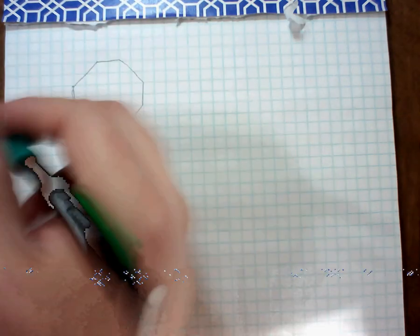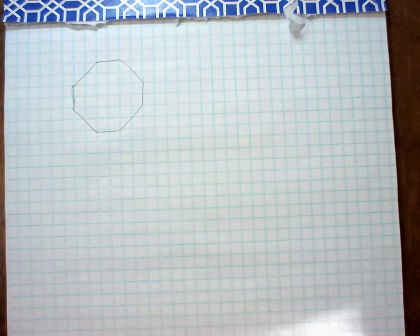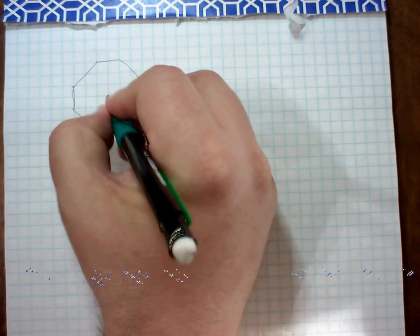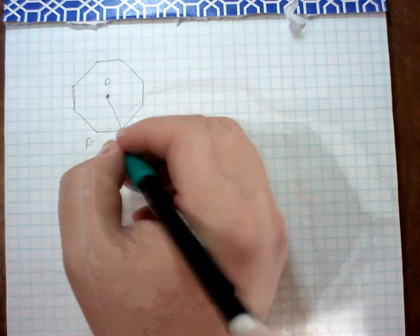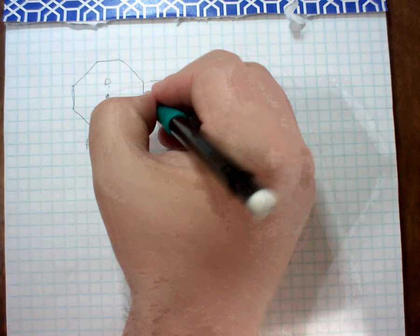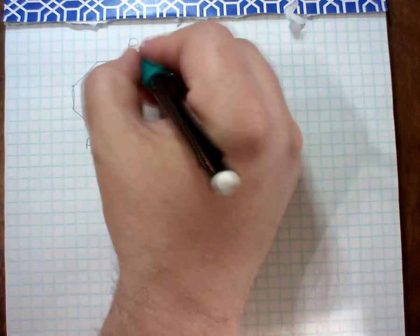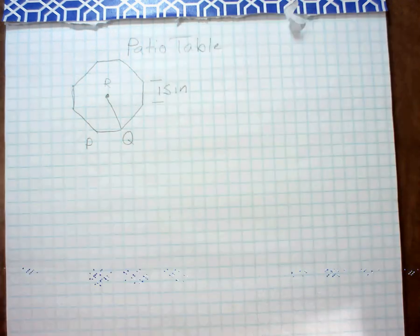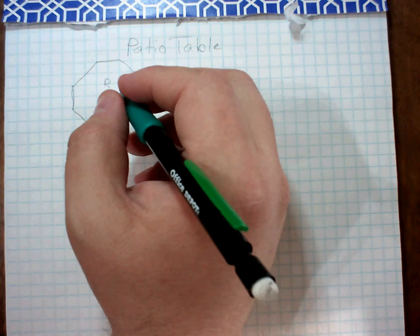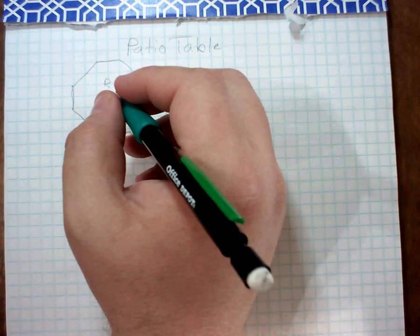Okay, so for our next example, we have an octagon. This is a regular polygon, and we are told the distance—let me label some things. This is P, this is R, this is Q. And we're told that the side length here is 15 inches. So this is like a patio table. Okay, and then we're told that the radius of this is actually 19.6.